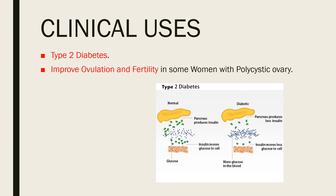Clinical uses of metformin: it is used in type 2 diabetes mellitus, alone or with other oral hypoglycemic agents, and is particularly useful in obese patients. Metformin has also been found to improve ovulation and fertility in some women with polycystic ovary syndrome.